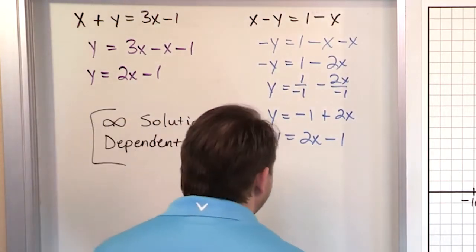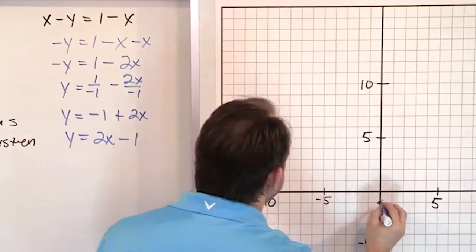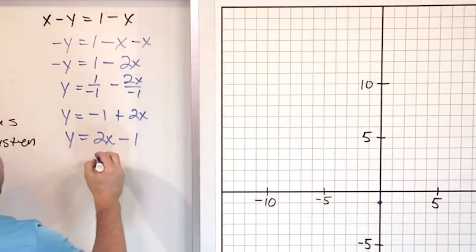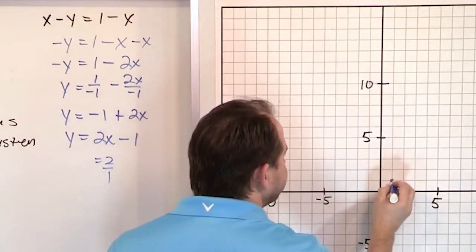Now just to be complete, I am going to graph it. So here we have negative 1 for the y-intercept. We'll do it real fast. There's negative 1. The slope is 2, which is 2 over 1, so rise over 1. We go up 2 over 1, and there we go.